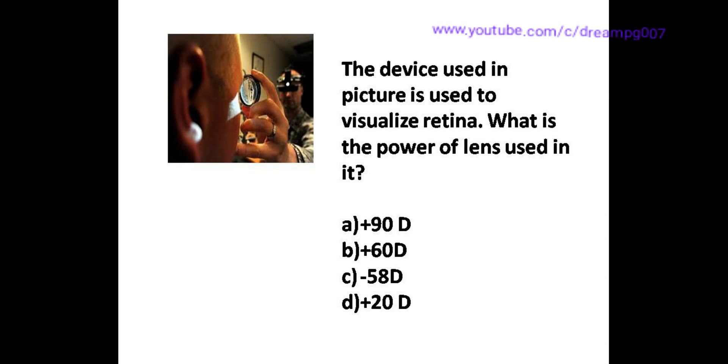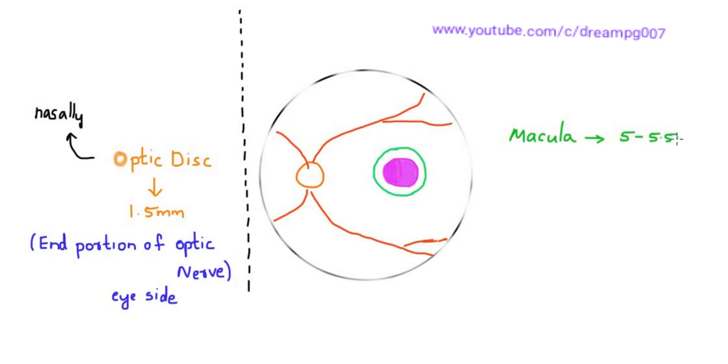Let's have a look into the details of fundus. The optic disc is seen in the orange color. Diameter of optic disc is 1.5 millimeter. Optic disc is the end portion of the optic nerve. Optic disc is seen in the nasal portion of the fundus. Macula is seen on the temporal portion of the fundus. The diameter of macula is 5 to 5.5 millimeter. It is a central portion of the fundus. The most sensitive part of the retina is the fovea centralis, which is seen inside this macula.